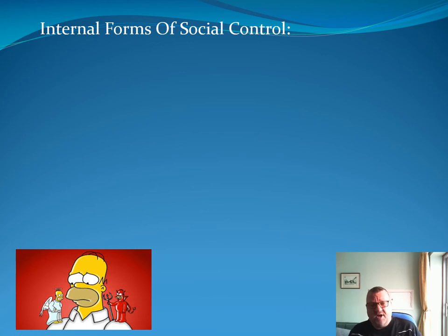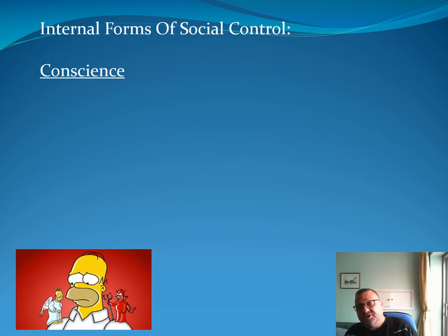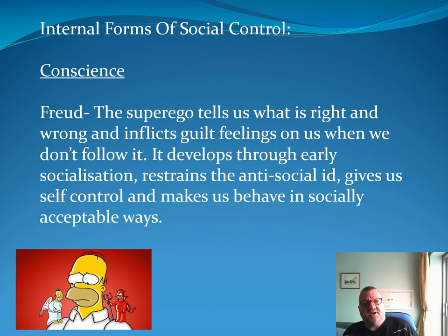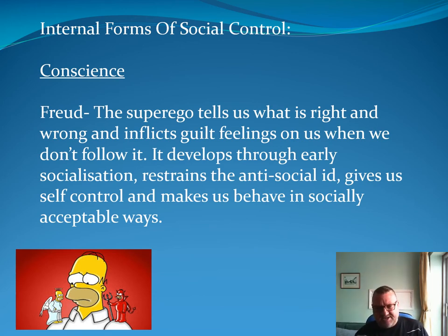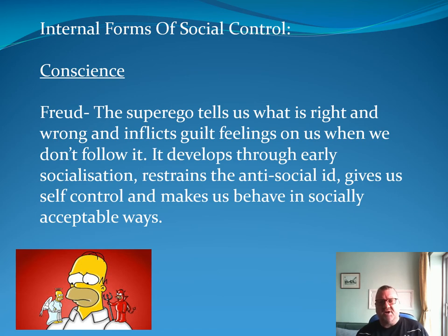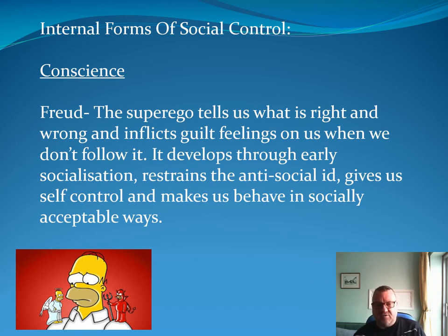Internal forms of social control should be familiar from Unit 2. The phrase 'conscience' should make you think of Freud and the superego. Freud said you've got this superego that tells us what's right and wrong and inflicts guilt feelings on us when we don't follow it. It develops in our early years as we become socialised, and the superego is there to restrain the anti-social id. Because the superego works against the id, it gives us social control. As we grow and become socialised, that makes us behave in a socially acceptable way.